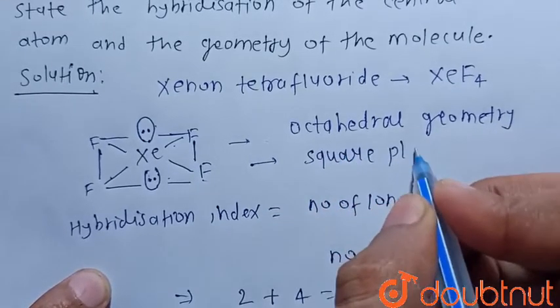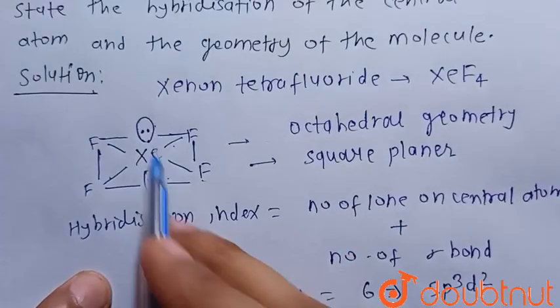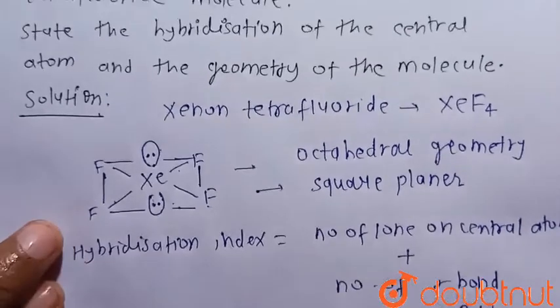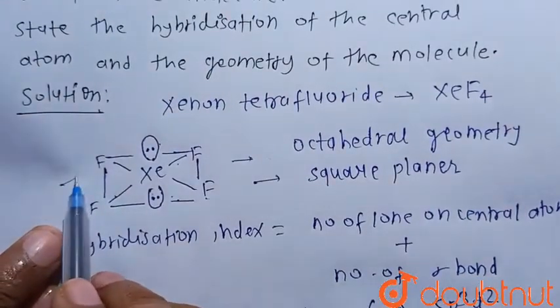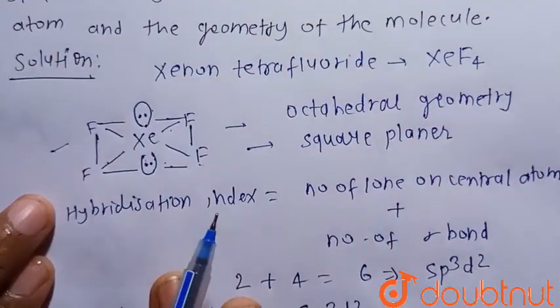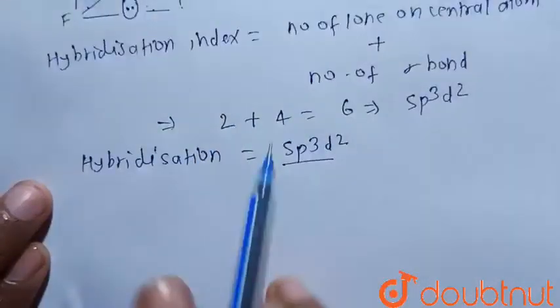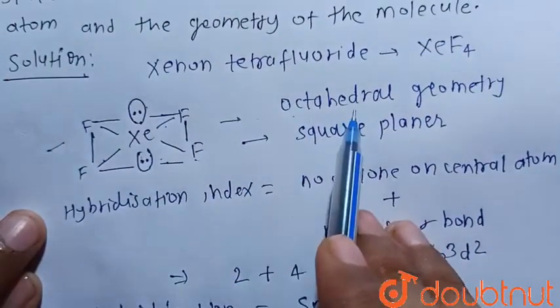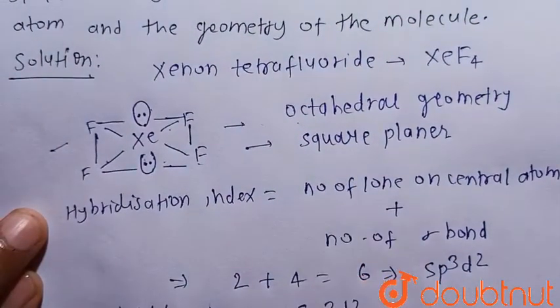Because while finding the shape, we do not consider the lone pairs. So we can clearly see that this is the structure of the xenon tetrafluoride molecule, hybridization of the central atom is sp3d2, and the geometry of the molecule is octahedral with square planar shape.